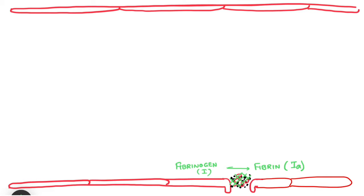The coagulation cascade has three arms. It has a common pathway, an extrinsic pathway, and an intrinsic pathway. We will first discuss about the common pathway.